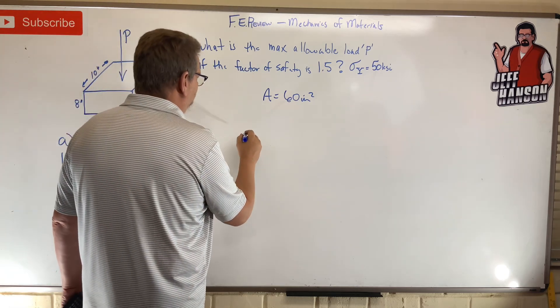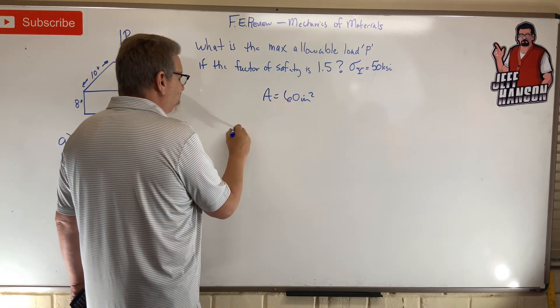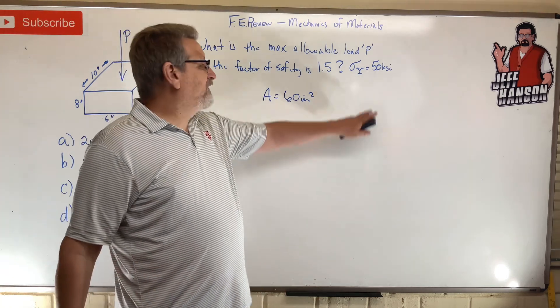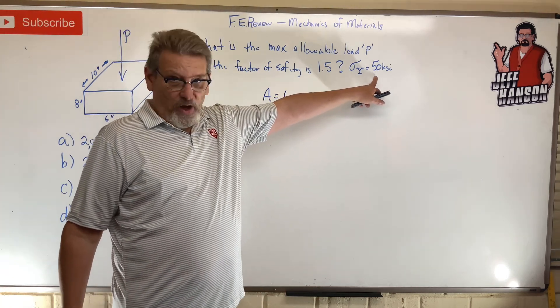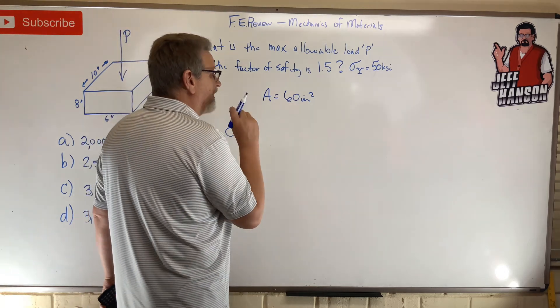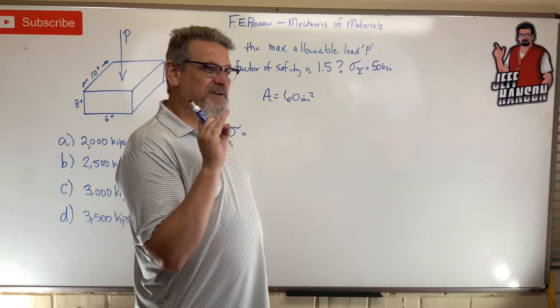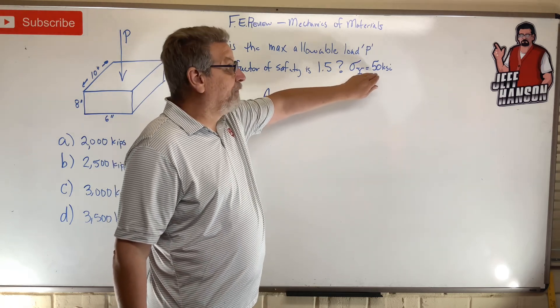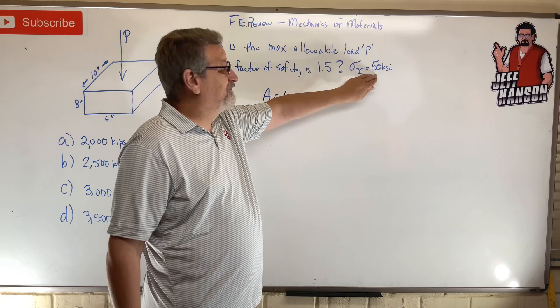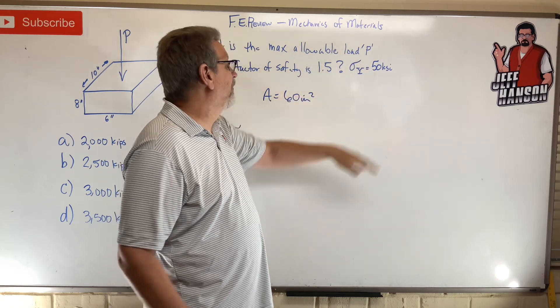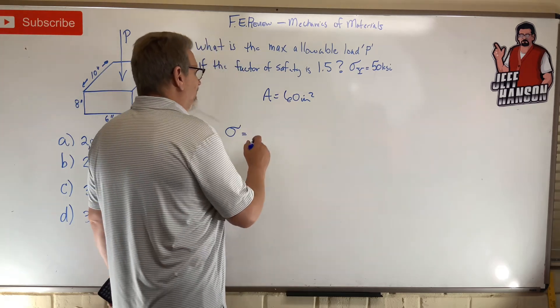That's yield stress, right? So the sigma that I'm going to work with is not going to be 50, because 50 represents a factor of safety of 1. I've got to adjust that. Factor of safety means I'm going to be safe, so is my stress going to be more than 50 or less than 50? Less than 50, of course. So I've got that 1.5—here's my choices: you can either multiply by 50 or divide it.